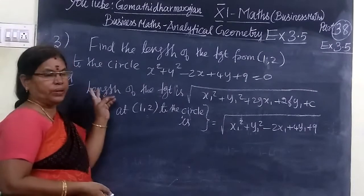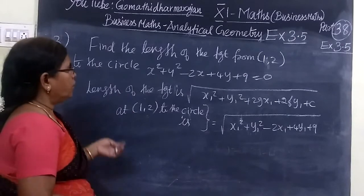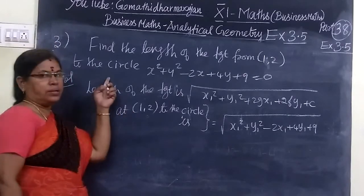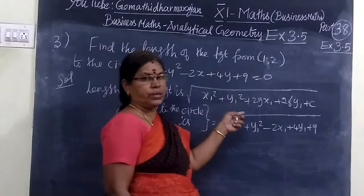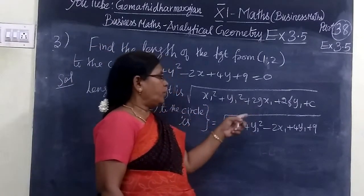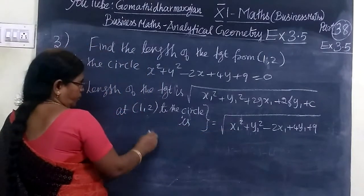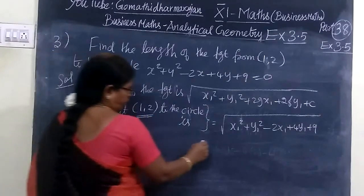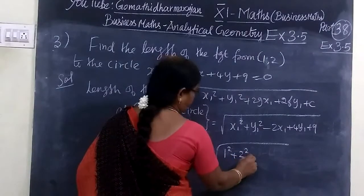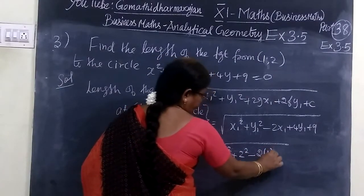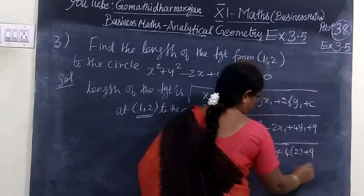The next question: find the length of the tangent from (1,2) to the circle. The length of the tangent formula is root of x1 square plus y1 square plus 2G x1 plus 2F y1 plus C. For x is 1 and y is 2: 1 square plus 2 square minus 2 bracket 1 plus 4 bracket 2 plus 9.